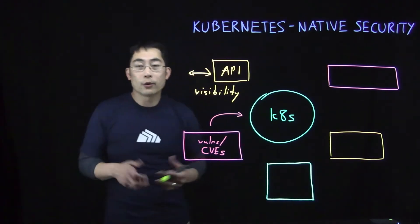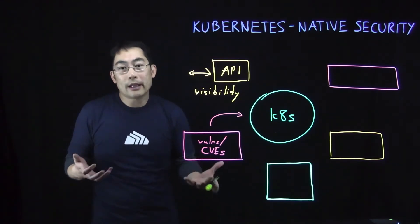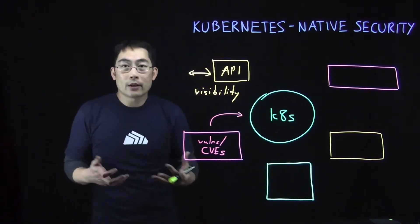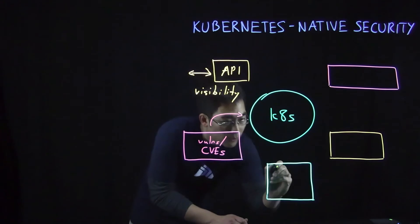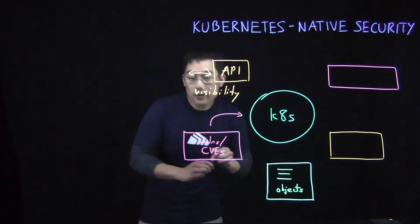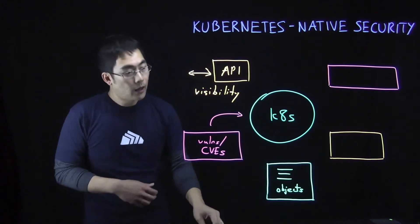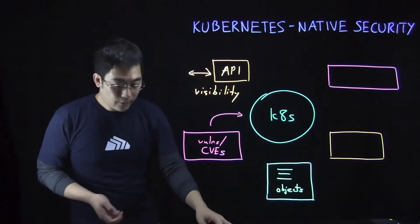The third criteria for a Kubernetes security solution is that it must base its security functionality on the resources within the Kubernetes object model. Some of these objects include things like deployments, namespaces, services, pods. These are the abstractions that make Kubernetes so powerful and so familiar to various teams, including DevOps teams.